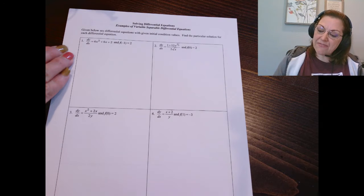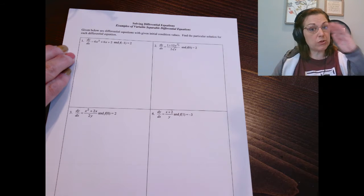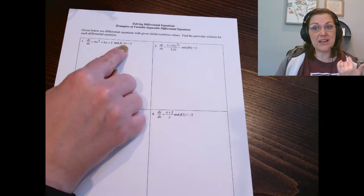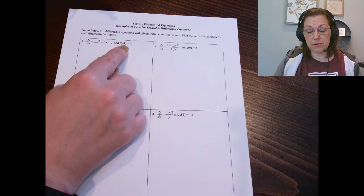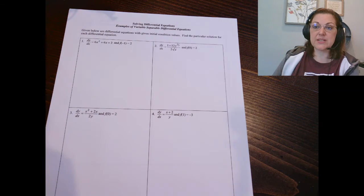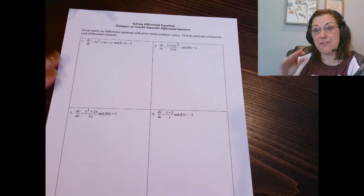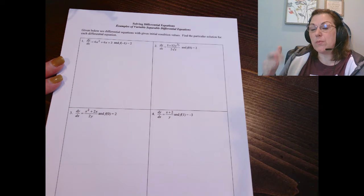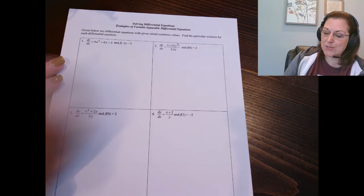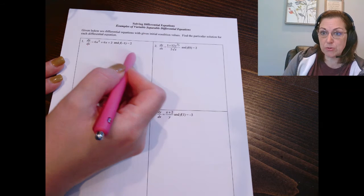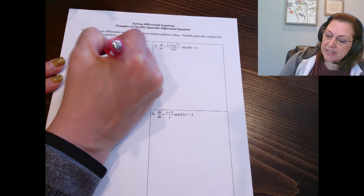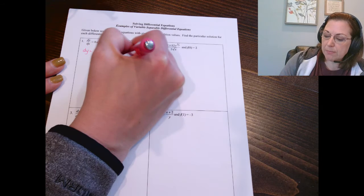We're going to look at finding the general solution and then we'll turn our attention to finding the particular solution because we are given an initial value. So let's start with the differential equation: dy/dx equals 6x squared plus 6x plus 2. If they are separable, what that means is we want to separate the variables — all the y's on one side, all the x's on the other side. That's pretty simple here if we'll multiply by dx.